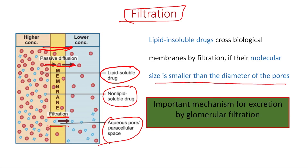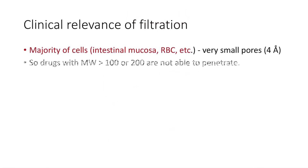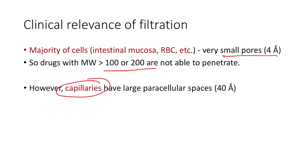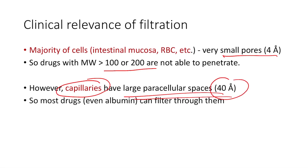Filtration is the most important mechanism of excretion through glomerular filtration in the kidney. Clinically, most intestinal mucosal cells have very small pores, so drugs with molecular weight more than 100–200 cannot penetrate. Capillary cells have large paracellular spaces, which is why albumin and some proteins can filter out through them. This is why we mostly see edema in congestive heart failure — fluid and molecules come out of those capillaries.